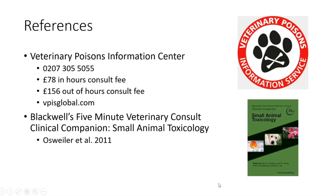As far as references go, the quick and easy one you can call is the Veterinary Poisons Information Centre here in the UK. They have consultation fees that vary depending on whether it's in-hours or out-of-hours, and I believe they also have a membership fee option. They are very useful if you need a quick answer. I also recommend a quick reference toxicology book — it's very easy to quickly find a toxin, summarizes everything concisely, and is perfect for a quick reference.